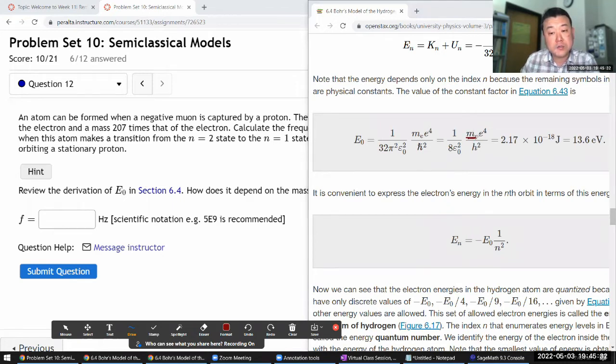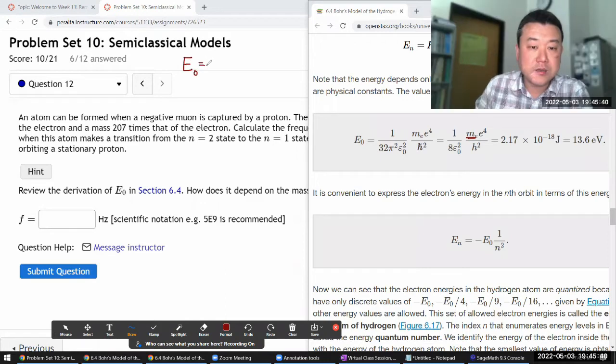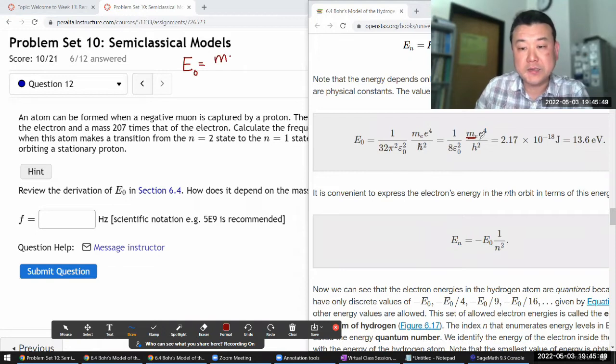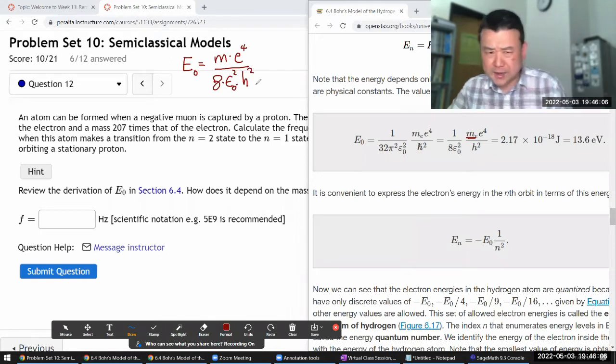Once you have made that confirmation, then at the end you have this result. This baseline energy is the mass of the orbiting particle times the elementary charge to the fourth power, divided by 8 times the permittivity of free space squared times Planck's constant squared.